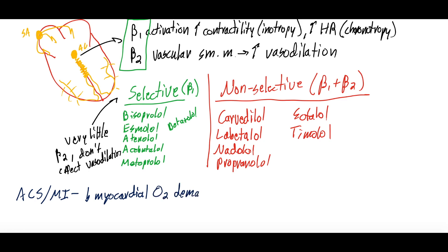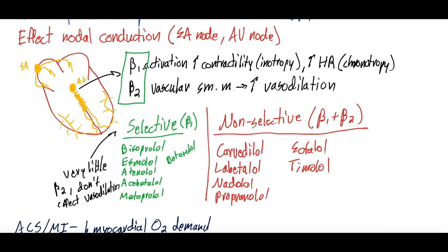We also use them for tachydysrhythmias. They're an antiarrhythmic for dysrhythmias. Because they decrease automaticity by decreasing that release of epinephrine and norepinephrine and inhibiting that beta 1 receptor on the nodal tissues.